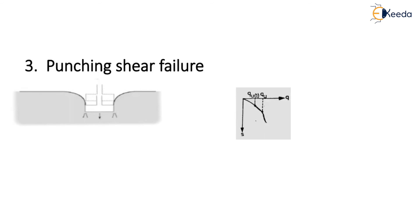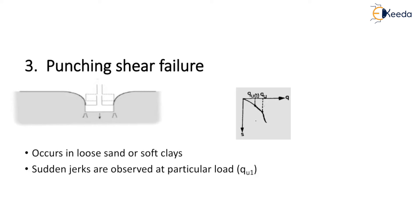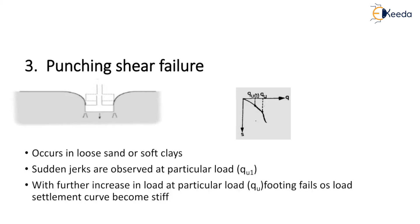The third type of shear failure is punching shear failure. The first figure shows the punching shear failure of a strip footing, and the second figure shows the load settlement curve for the punching shear failure. This type of failure occurs in loose sand or soft clays. Sudden jerks are observed at a particular load QU1. With further increase in load, at a particular load QU, the footing fails as the load settlement curve becomes steeper. After load QU, the load settlement curve has become stiffer. Since the failure surface doesn't reach the ground, no heaves are observed.